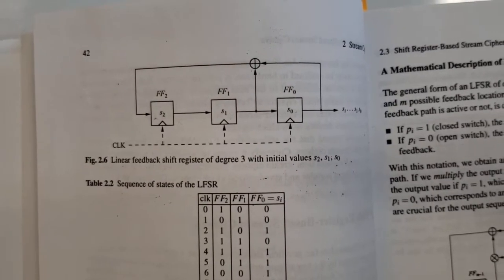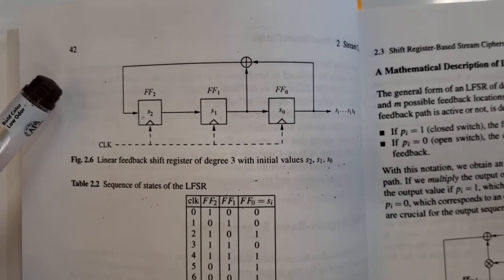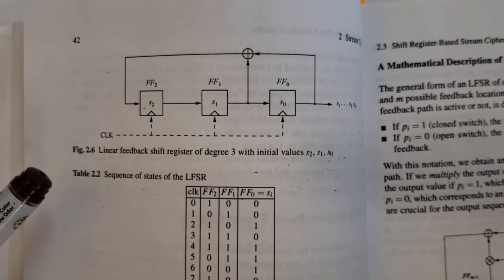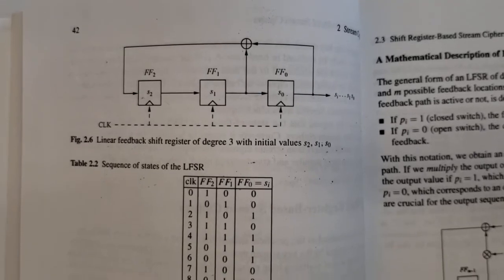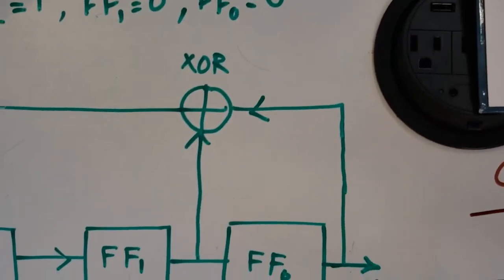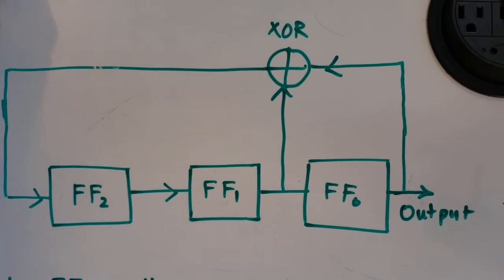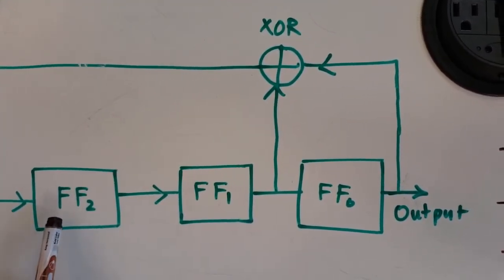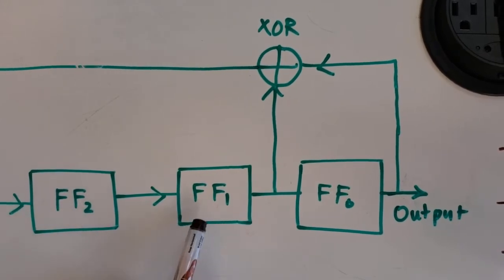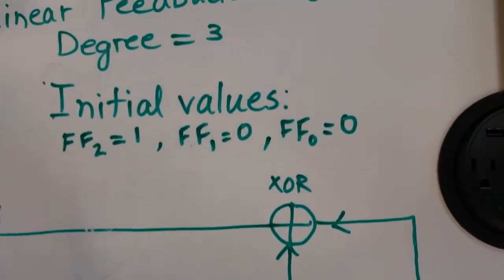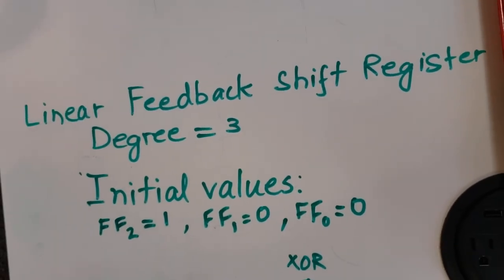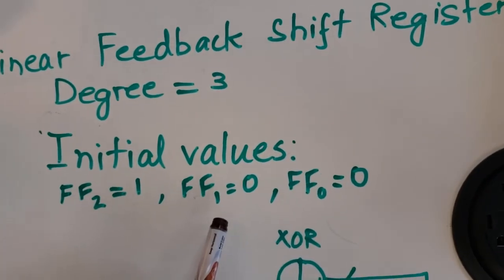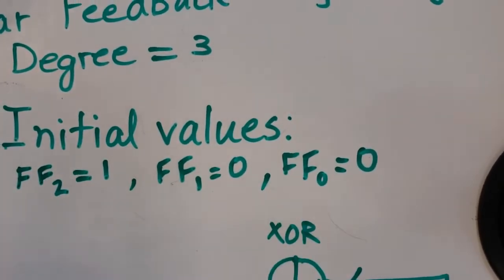In the textbook on page 42, an example of a linear feedback shift register is given. We have a linear feedback shift register with degree 3. Degree 3 means we have three flip-flops: FF2, FF1, and FF0. The initial values of these flip-flops are FF2 is 1, FF1 is 0, and FF0 is 0.